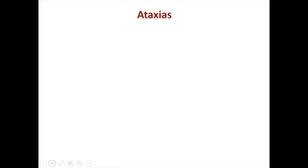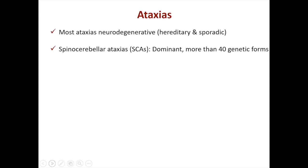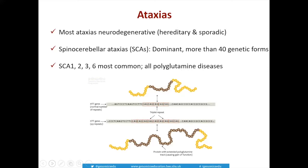As Linda described, most ataxias are neurodegenerative. Not all of them are hereditary — some are sporadic — but we have been focusing primarily on hereditary ataxias. Amongst the hereditary ataxias, we've been focusing on spinocerebellar ataxias that are dominantly inherited: if one of your parents has it, you have a 50-50 chance of inheriting it. There are by now more than 40 different genetic forms, with SCA1, 2, 3, and 6 being the most common.